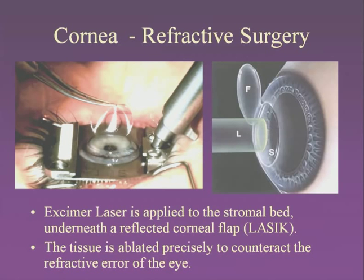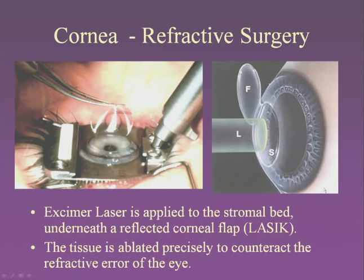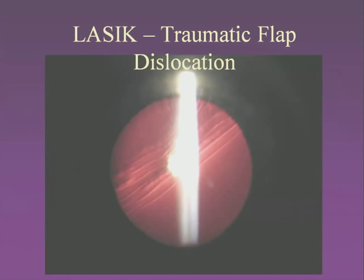Here we have the stroma — the large central portion — and the endothelial cells that dehydrate the stroma and keep the type I collagen fibrils at a very precise distance, about a quarter of a wavelength of visible light spacing, which allows transparency. In LASIK surgery, the epithelium is cut, a flap is lifted off, laser is applied to the stroma to reduce steepness for nearsighted patients, and the flap is replaced. Since the cornea lacks blood vessels, it has a much less rigorous healing response, so the flap can become dislodged.